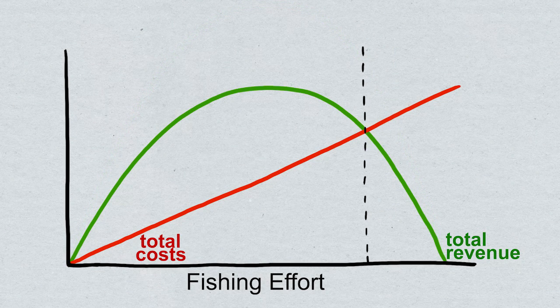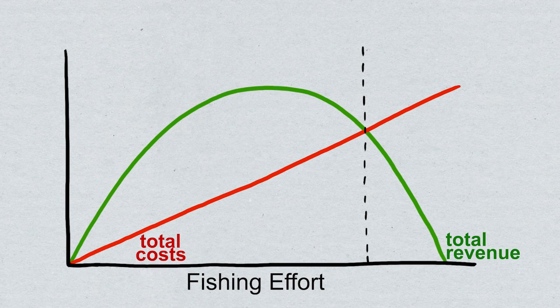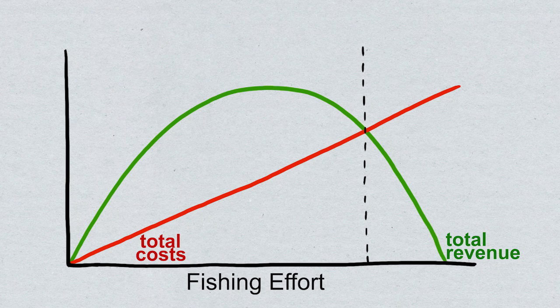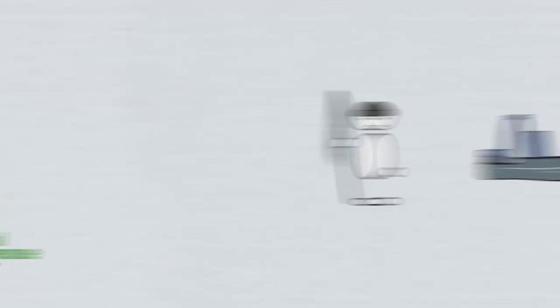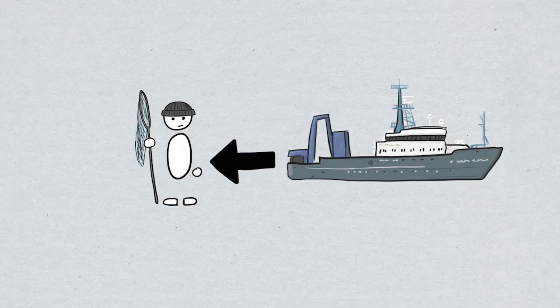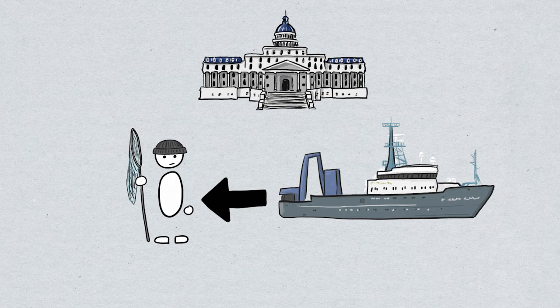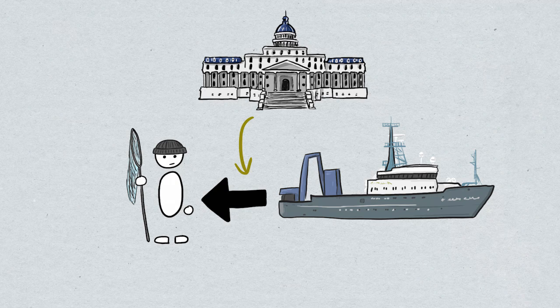With an overfished stock, the cause is typically too many fishermen chasing the fish. So unfortunately, reducing the number of fishermen is almost definitely going to have to happen. But people like to have jobs. It's one of the most important things an individual can have. And the government likes to make decisions that create jobs. They often see that as their duty.